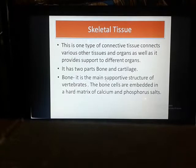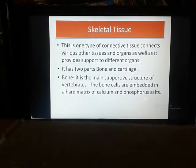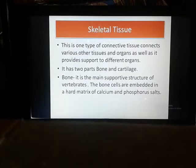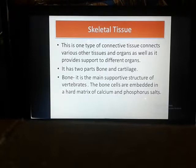Skeletal tissue has two parts: bone and cartilage. If you broadly classify connective tissues, there are three types: supportive connective tissue, fibrous connective tissue, and fluid connective tissue. Supportive connective tissue includes bone and cartilage; fibrous connective tissue includes tendons and ligaments; and fluid connective tissue includes blood and lymph, which will be discussed in the next slide.